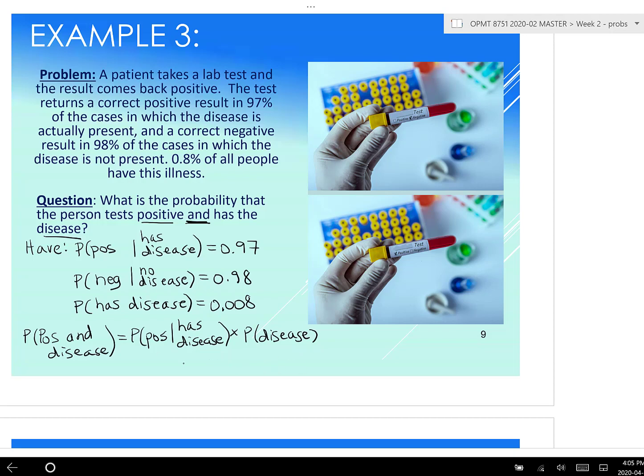Whatever is behind the line, that's what you need to then multiply by afterwards. Somebody has a disease. What are the odds they also test positive given they have that disease? So, positive given has disease is 0.97. Has the disease, 0.008. Multiply those two together and we get 0.00776. That's the odds of testing positive and having the disease.